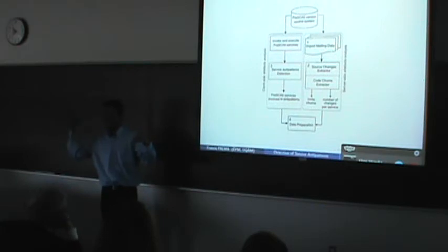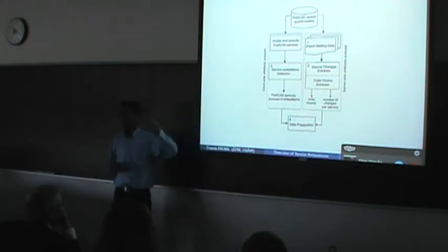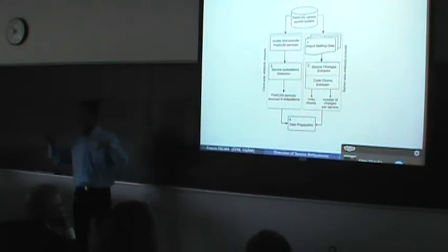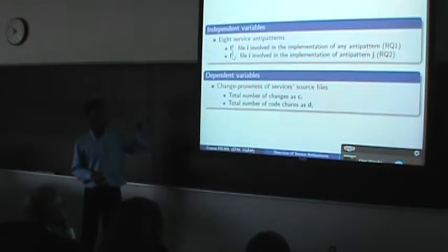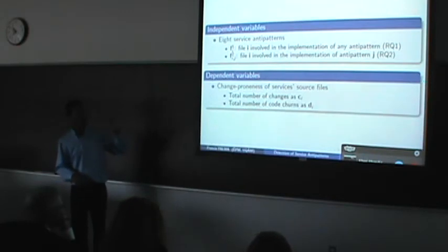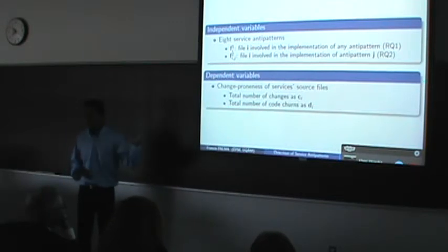When we have the services involved in patterns, we have the number of changes and change details. We need to map them by finding the files related to a service anti-pattern, and via those files we can map the number of changes of services. We have two types of variables: the independent variable, which is the service anti-pattern, and the dependent variable, which is change proneness - the number of changes and backward trends.